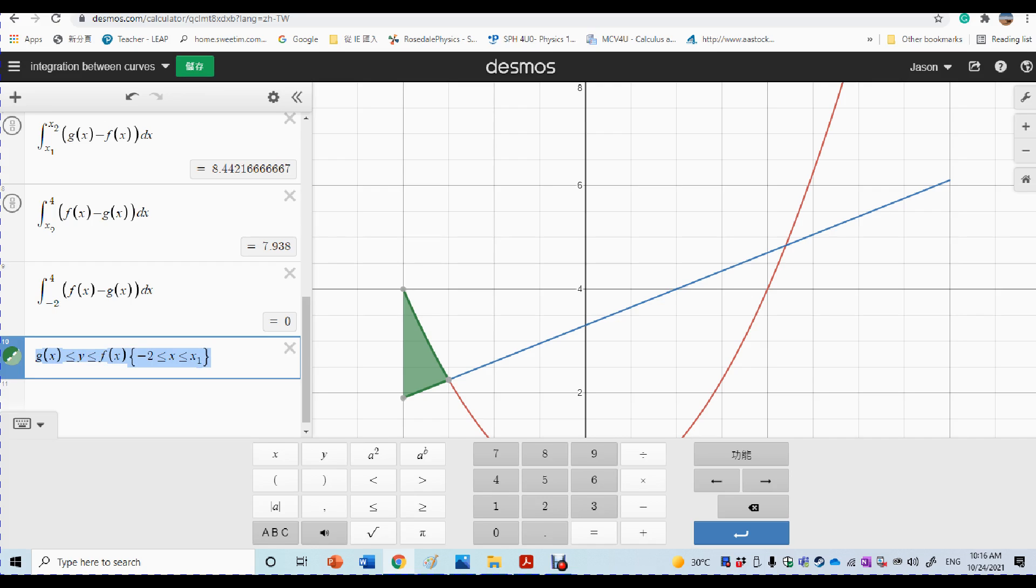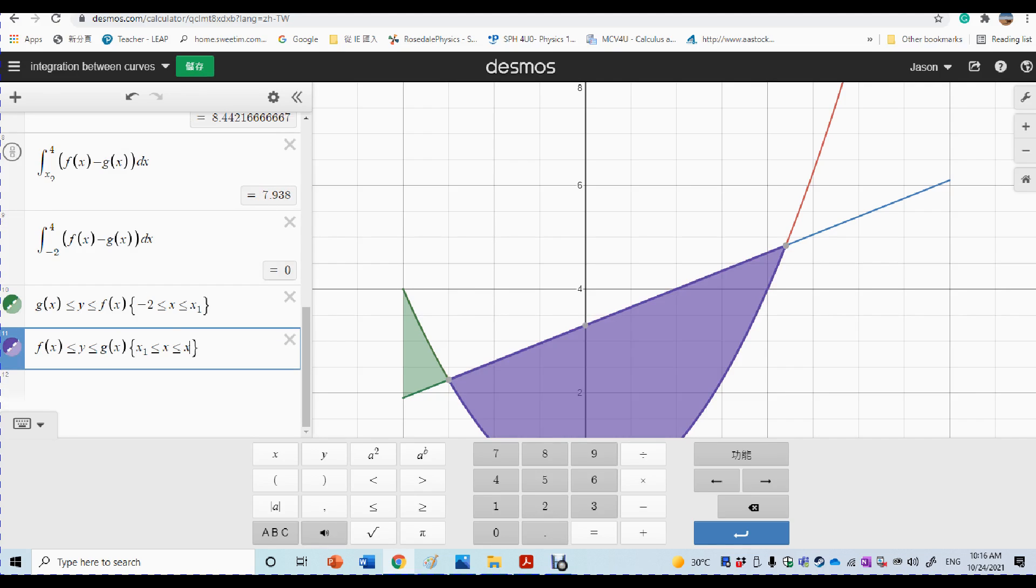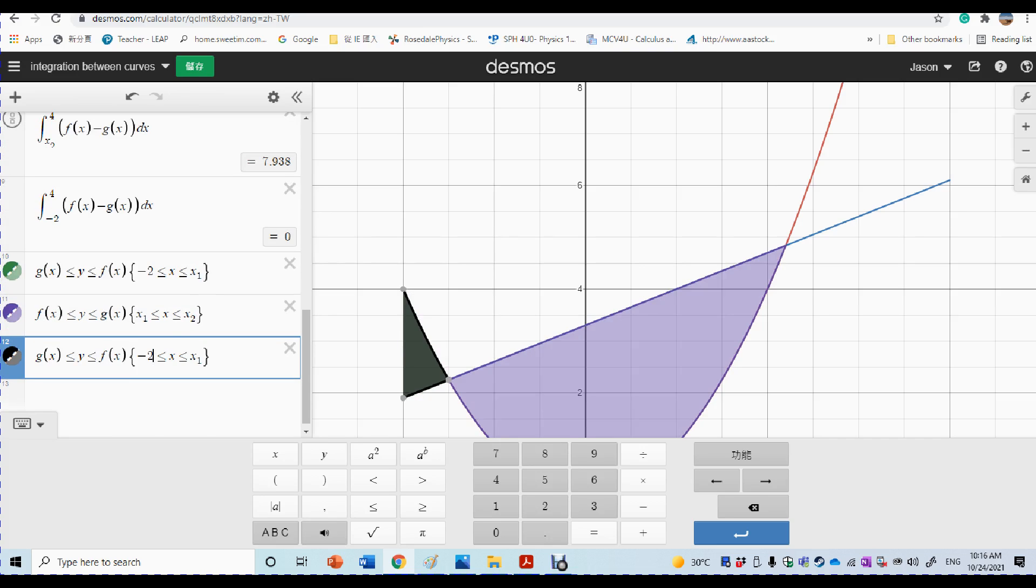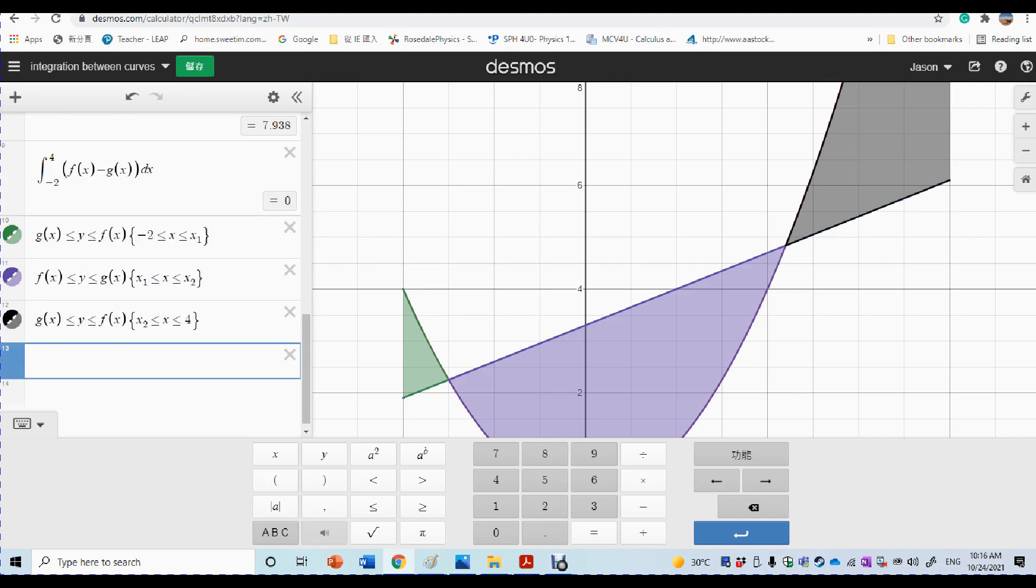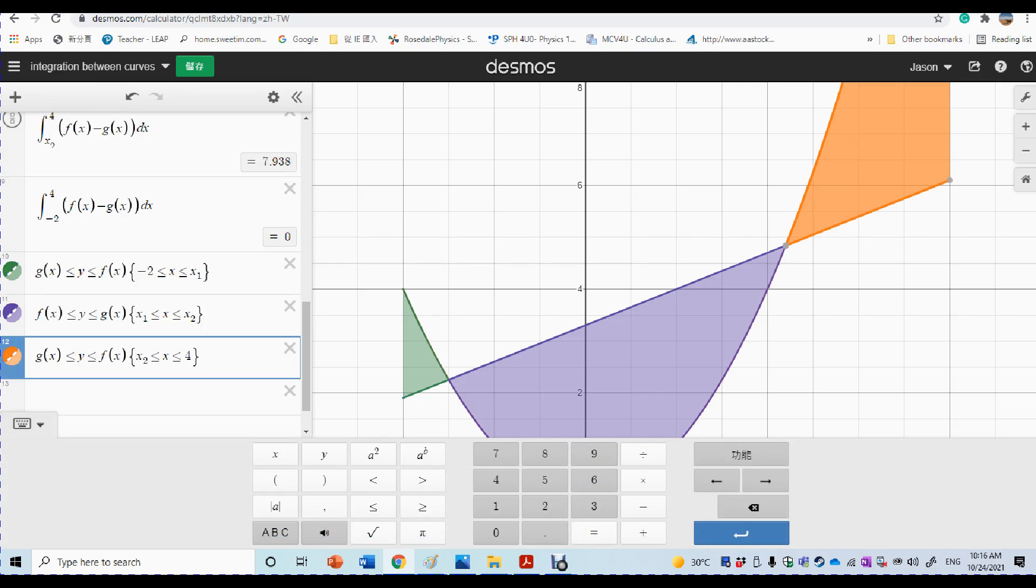Using the same idea, you can show other parts as well. So for the second part, I would say you should be between FX and GX. And that should be between x one and x two. See that part is shaded. And the third part is between x two and four. And then might change the color to orange, whatever you like.